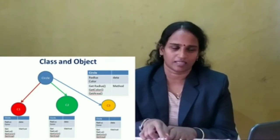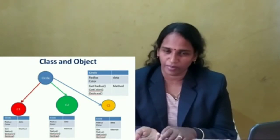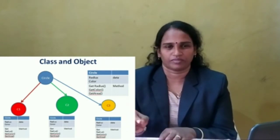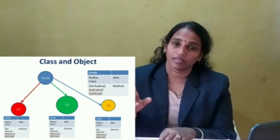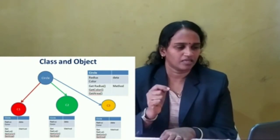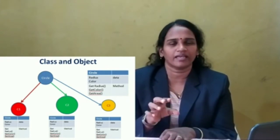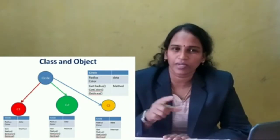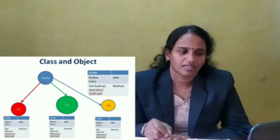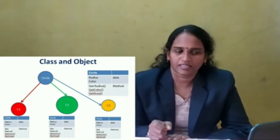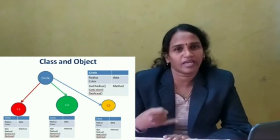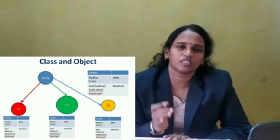Here the circle is the class. The formula area equals pi r squared is used regardless of which specific circle we develop. The data inside the class is radius and color. The functions inside the class are: get radius, get color, and get area. These are all the functions — this is our method.